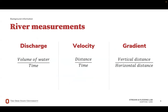Discharge is the volume of water that flows through a river channel or stream at a given location within a set period of time. Velocity is the speed at which water in a stream or other body of water moves in a particular direction. Gradient is the slope or steepness of a stream channel, typically measured as the vertical drop of a stream over a specified horizontal distance, or the rise over the run.